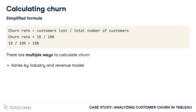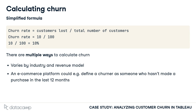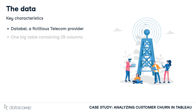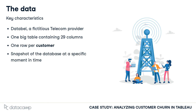A traditional e-commerce platform might consider a certain customer a churner if he or she hasn't made a purchase in the last 12 months. The Databel dataset consists of 29 different columns and has one row per customer. You'll be analyzing a snapshot of the database at a specific moment in time, meaning there is no time dimension.